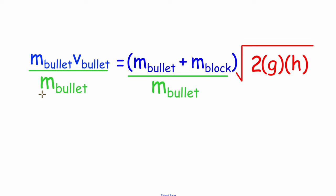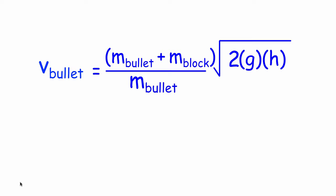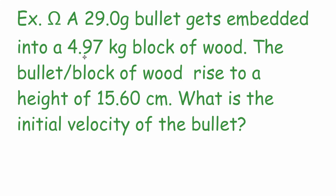We're going to divide both sides by the mass of the bullet, which will cancel on the left side. You can't cancel on the right side because you have a binomial through addition in the numerator. This means our equation looks like this: the speed of the bullet equals the mass of the bullet plus the mass of the block, divided by the mass of the bullet, multiplied by the square root of 2gh — where g is gravity at 9.8 m/s² and h is the height the block of wood is raised to.